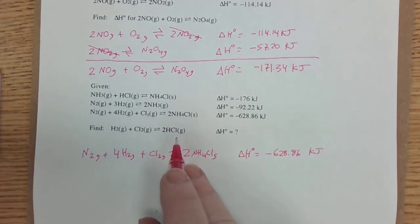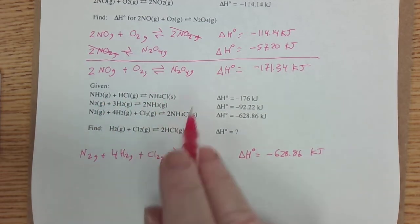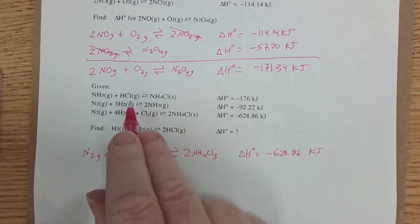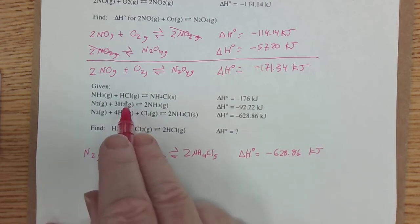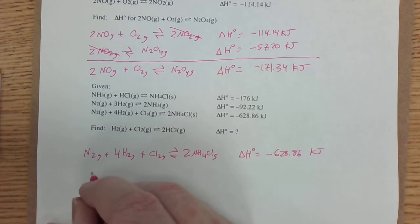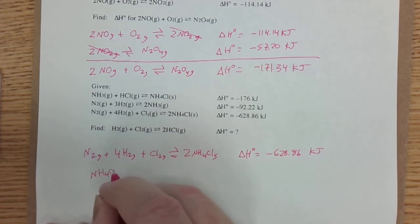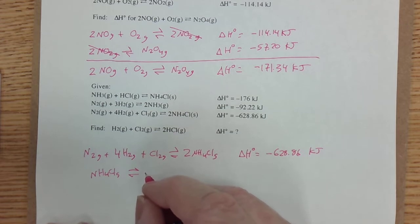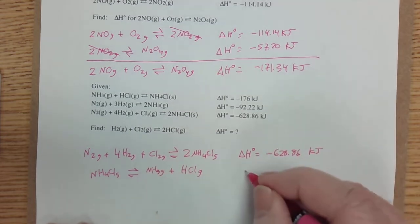Now, I need HCl as a product. The only place I see HCl in all of these equations is in this first equation. But it's on the wrong side. It's a reactant I want as a product. So I'm going to reverse that.